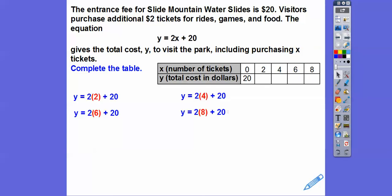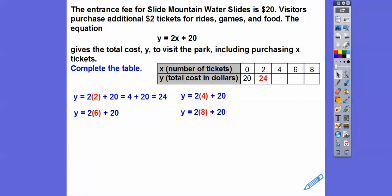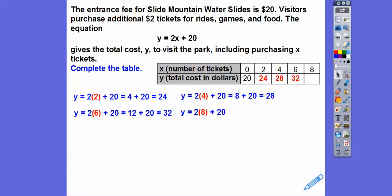So y equals 2 times 0 is 0, plus 20 is 20 — it costs $20 to get in without buying any tickets. If we bought 2 tickets: 2 times 2 is 4, plus 20 is 24. If we bought 4 tickets: 2 times 4 is 8, plus 20 is 28. Then 2 times 6 is 12, plus 20 is 32. And finally, 2 times 8 is 16, plus 20 is 36. That's our table for Slide Mountain.